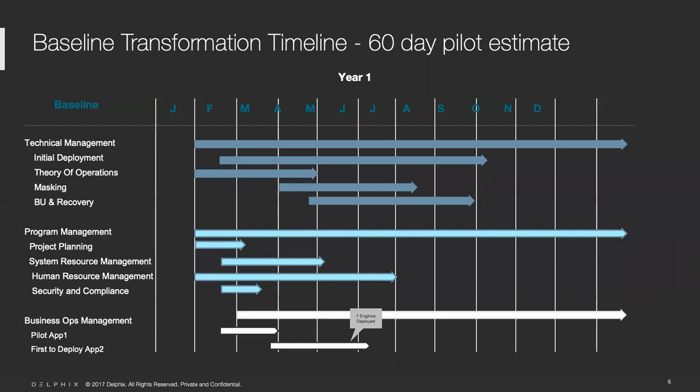Talking about the timeline — a 60-day pilot estimate, again doesn't have to be Delphix, could be anything. In the timeline you see a one-year deployment for the enterprise level. If you're constrained in one year, just shift the months around. Your initial deployment could cover all those baseline deployment blocks. The 60-day pilot is when that customer starts seeing return on their investment — when you get the first system in and the first virtual database. It's going to take some time: masking, backup and recovery — so you're going to have that initial deployment and theory of operations.